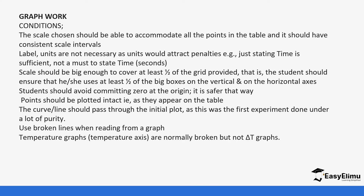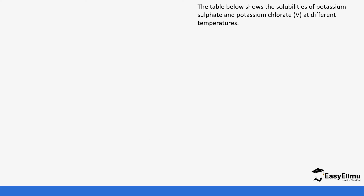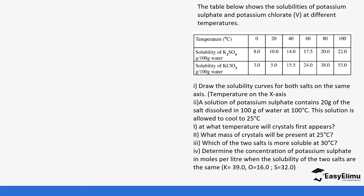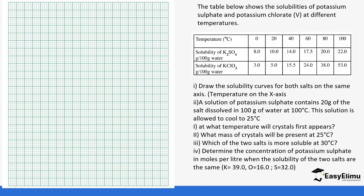Temperature graphs are normally broken, but not the changing-temperature graphs. For the worked example, the table shows the solubilities of potassium sulfate and potassium chloride at different temperatures in degrees Celsius and masses per 100 grams of water. The first question asks you to draw the solubility curve for both salts on the same axis.